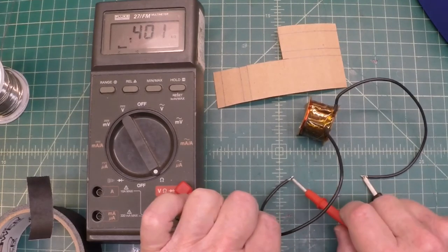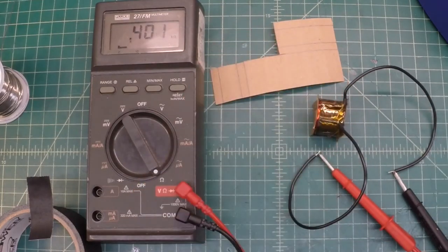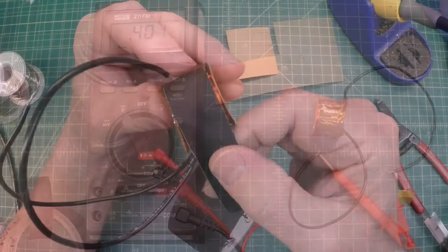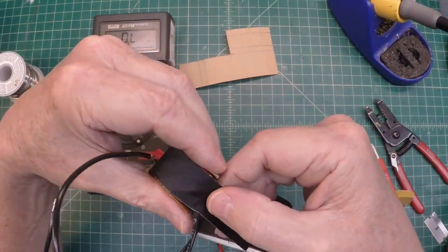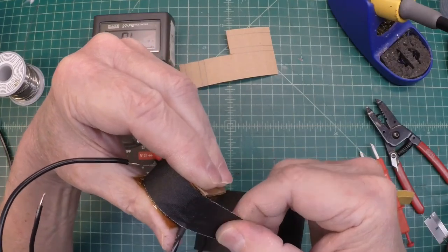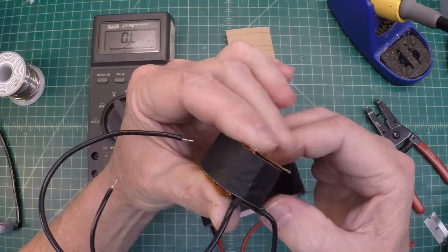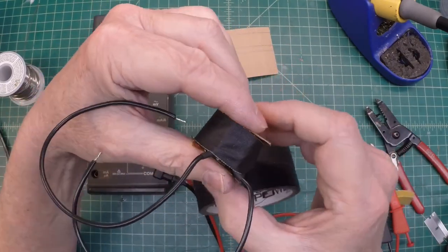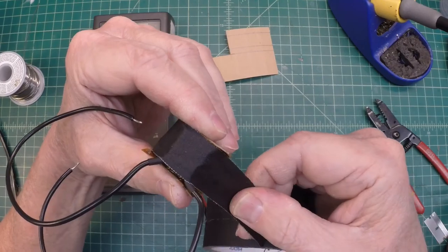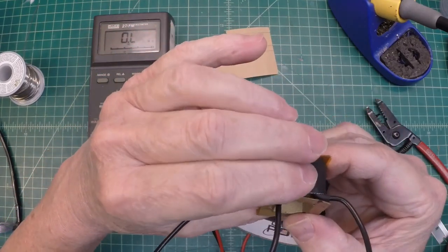Let's do another DC resistance check here, make sure we're good. 401, 402. I think I'm good there. Let me go ahead and get more of the gaffer tape and do a final wrap there. You can see here I've already got the gaffer tape cut to the width that I want.